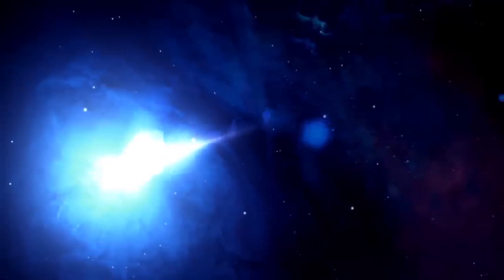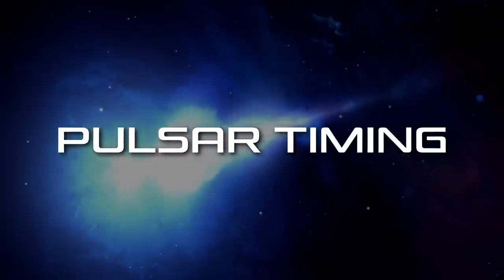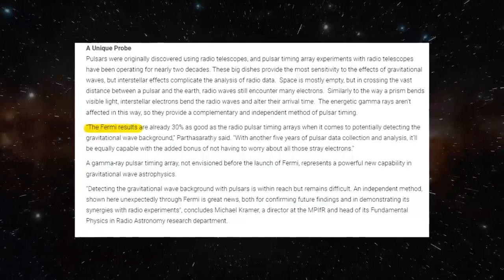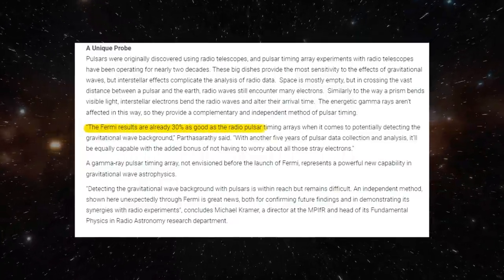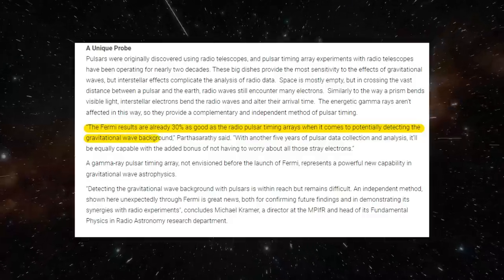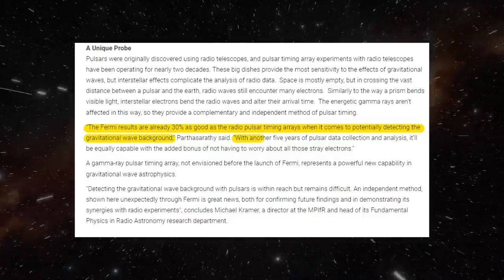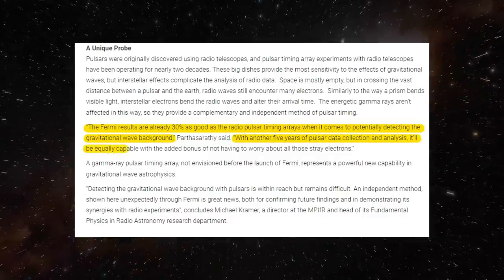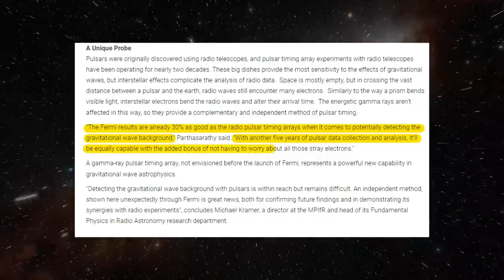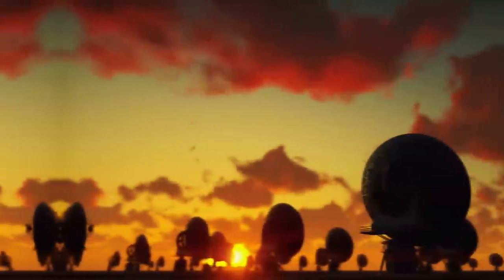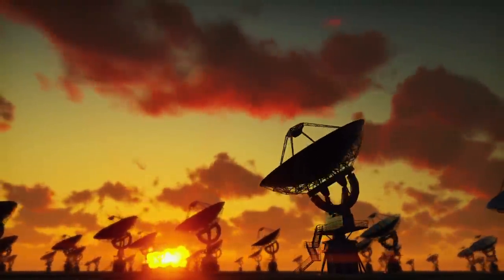Co-author of the study Parthasarathy said: 'The Fermi results are already 30% as good as the radio pulsar timing arrays when it comes to potentially detecting the gravitational wave background. With another five years of pulsar data collection and analysis, it will be equally capable with the added bonus of not having to worry about all those stray electrons.' Within the next decade or so, radio and gamma-ray astronomers both expect to reach sensitivity that would then allow them to pick up gravitational waves from pulsars and orbiting pairs of monster black holes.